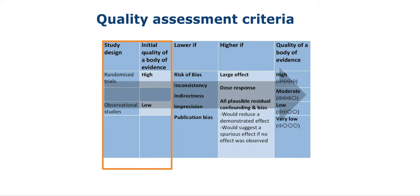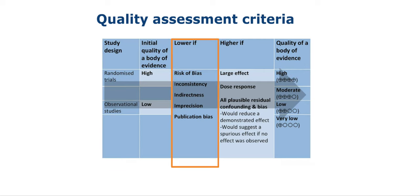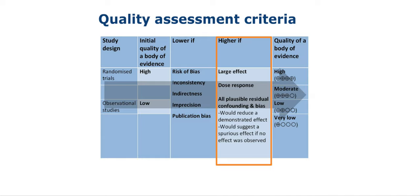The criteria used to assess the quality of the evidence are shown on this slide. The initial study design — either randomized controlled trials or observational studies — determines the initial quality of a body of evidence. There are five factors that lower the quality of the evidence, applying to both randomized controlled trials and observational studies. And there are three factors that increase the quality of the evidence: large effects, dose-response relations, or if all plausible residual confounding and biases would either reduce a demonstrated effect or suggest a spurious effect if no effect was observed.